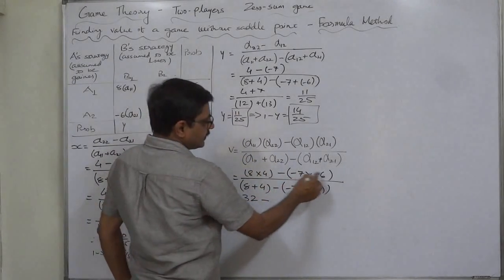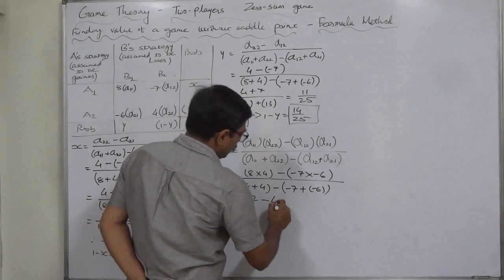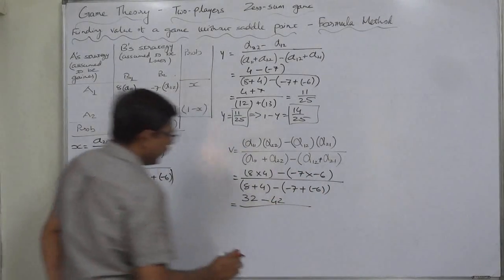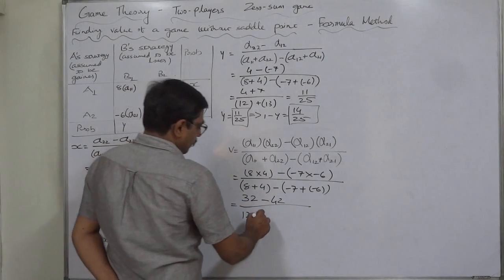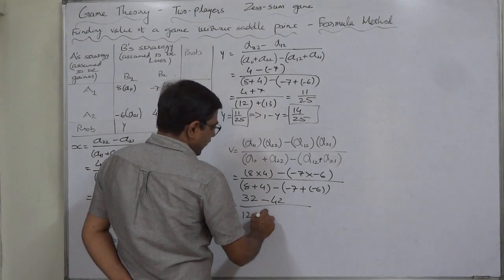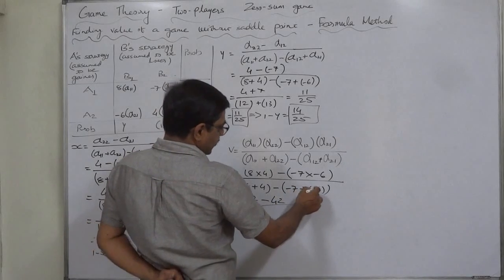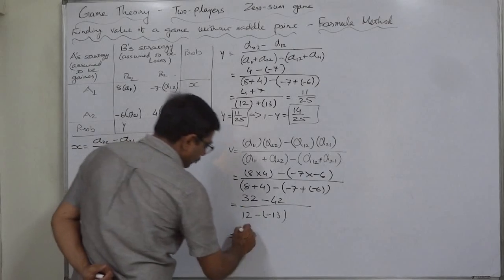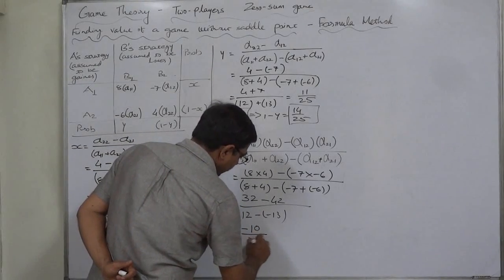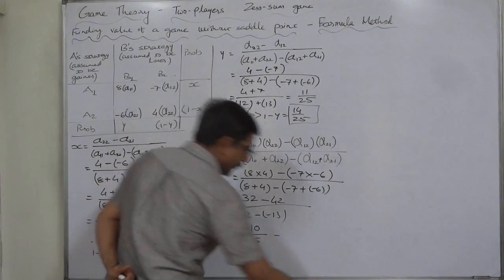So it is 8 into 4 32 minus minus 7 into minus 6 42 minus 42 upon 8 plus 4 12 minus minus 7 minus 6 minus 13 so ultimately it comes to minus 10 upon 25 so value of game is minus 2 by 5.